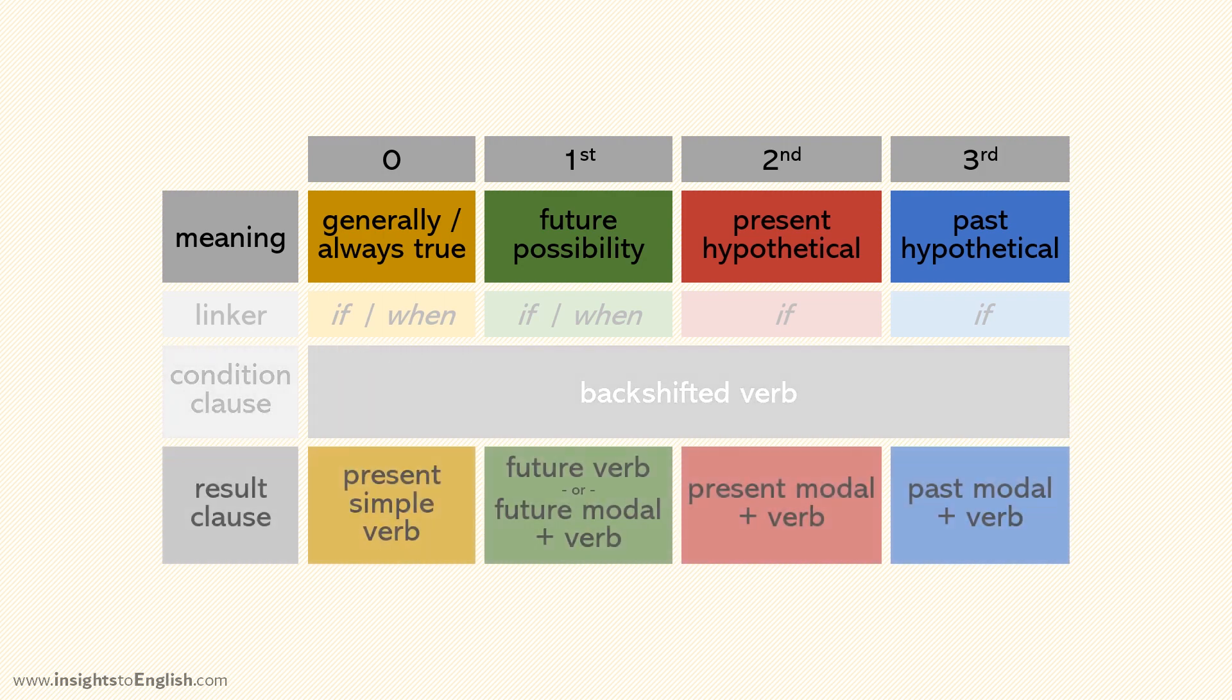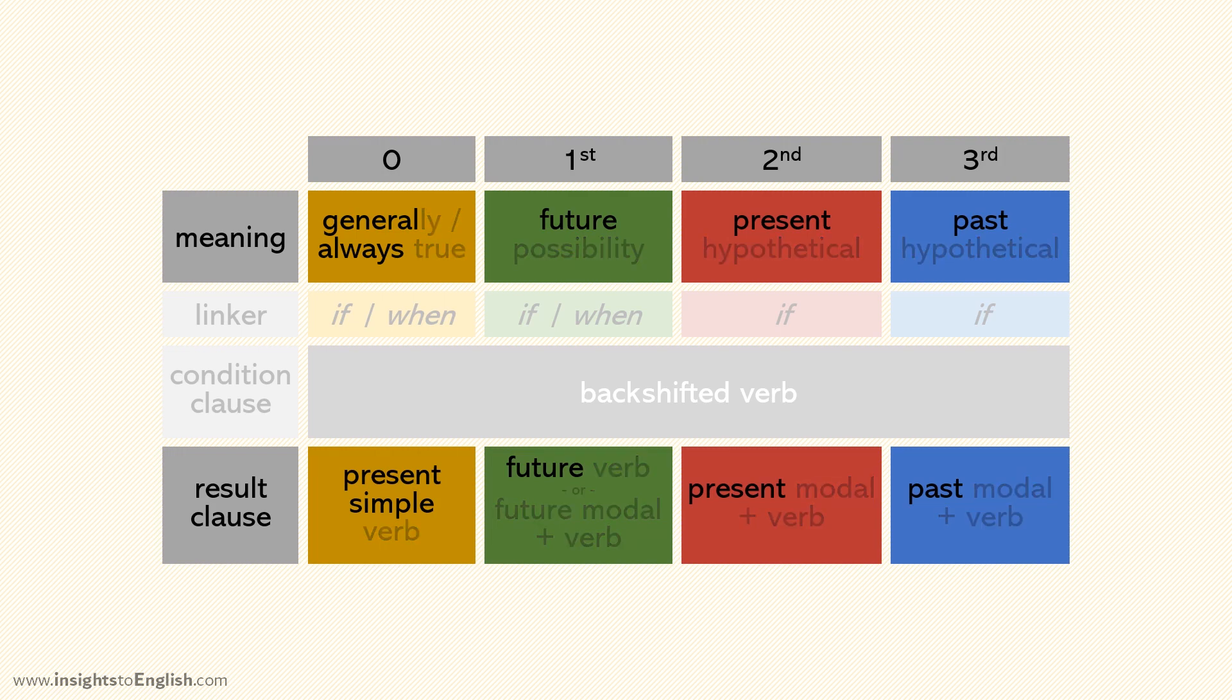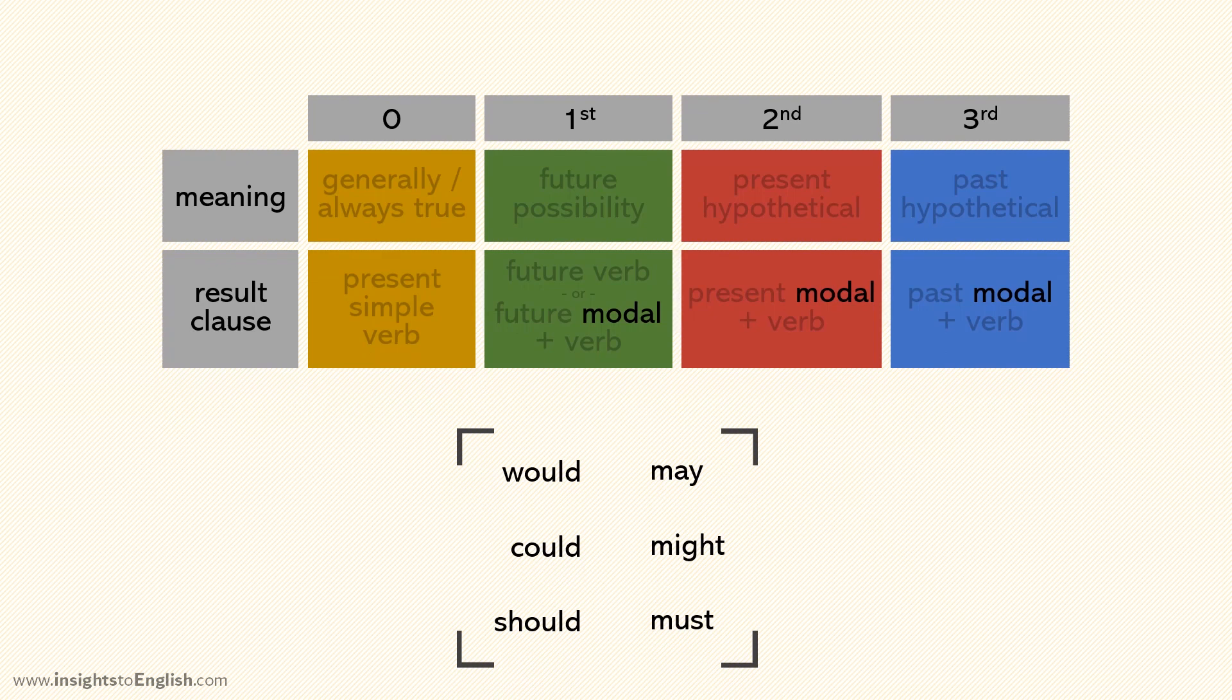Take a look at the results clauses now. What's the first thing you notice? The tense is the same as the meaning this time. Good to know. What else? Some of them have modals. What are modals again? They are auxiliary verbs that qualify the main verbs. Words like would, could, should, may, might, and must. Right. You did say that we use would a lot in conditionals.